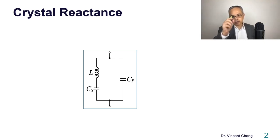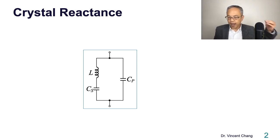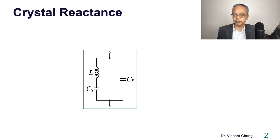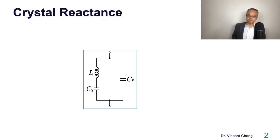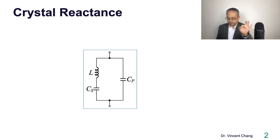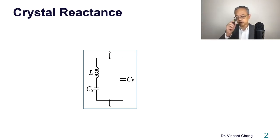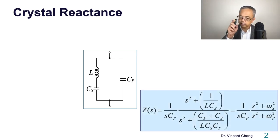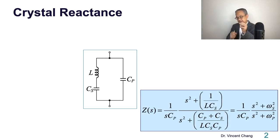Let's get the crystal reactance first. But before we get the reactance, we need to review what we have learned from the previous lecture. The first one: the equivalent circuit. This represents the approximate equivalent circuit of a crystal. When you solve this equivalent circuit, you can get the crystal impedance. Inside this expression, there are two important parameters embedded inside this crystal impedance.